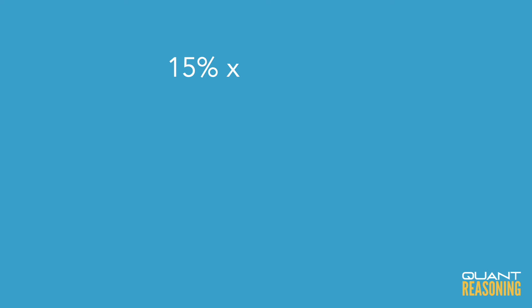This question starts by describing a commission of 15% of 500. I'll pause and figure out what that is using this trick of reducing the percent symbol with two zeros. The percent symbol literally means divided by a hundred, so I can reduce it with two zeros, and we end up with 15 times 5 equals 75. So that's the commission.